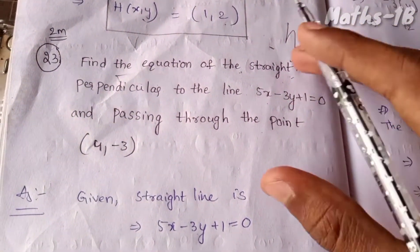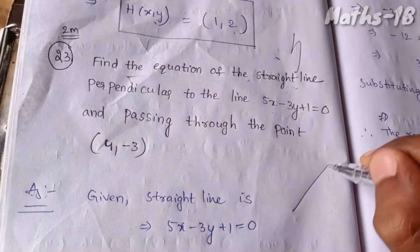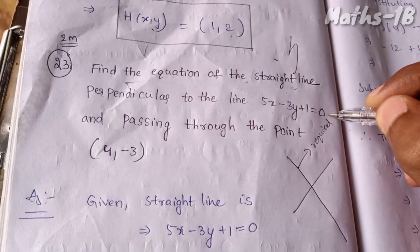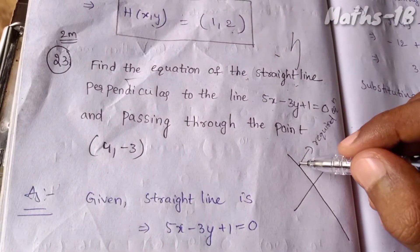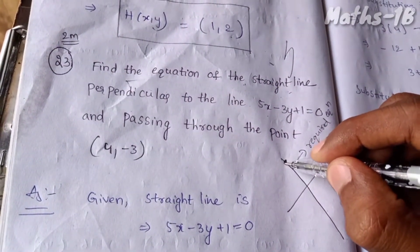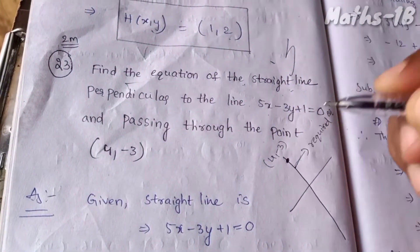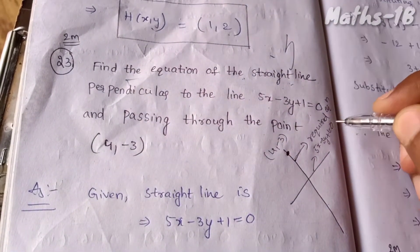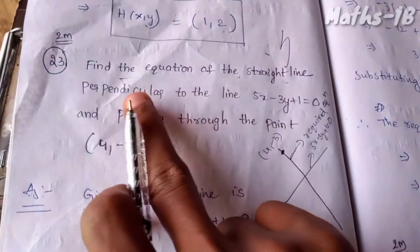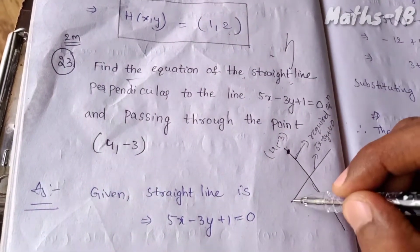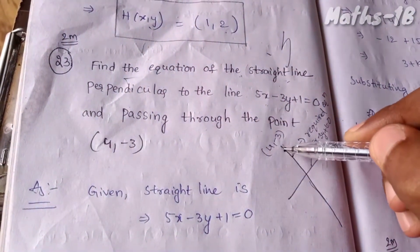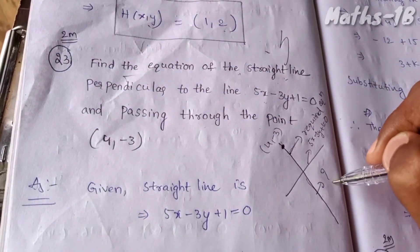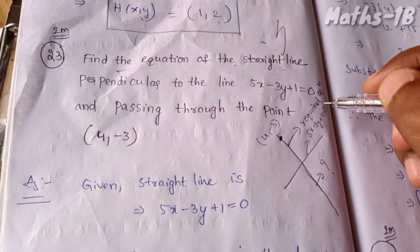The equation of the line passing through the point (4, minus 3) is equal to 0. Now, let's look here. Find the equation of the straight line perpendicular to the line 5x minus 3y plus 1 is equal to 0, and passing through the point (4, minus 3).